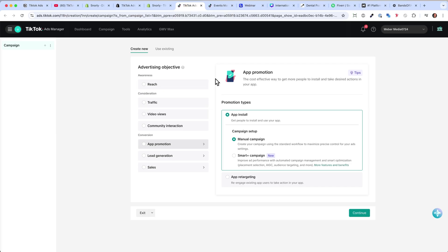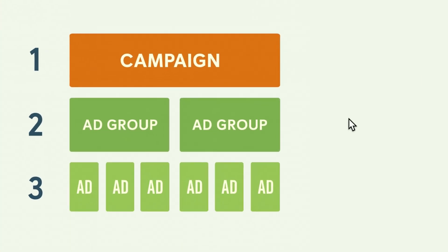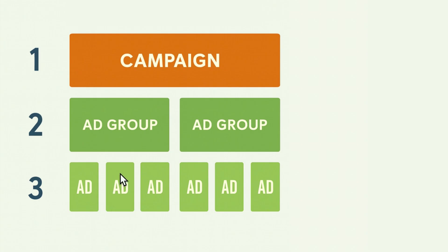Now the fun part — we want to create our advertising campaign inside TikTok. Before we do so, let me explain the campaign structure. In TikTok you always have a Campaign, and one campaign can include multiple Ad Groups, and one ad group can have multiple Ads. On the campaign level you set the goal — for example conversions, clicks, or reach. On the ad group level you choose placement and targeting such as age, gender, and interests. On the ad level you upload the creative video and test different ads against each other.